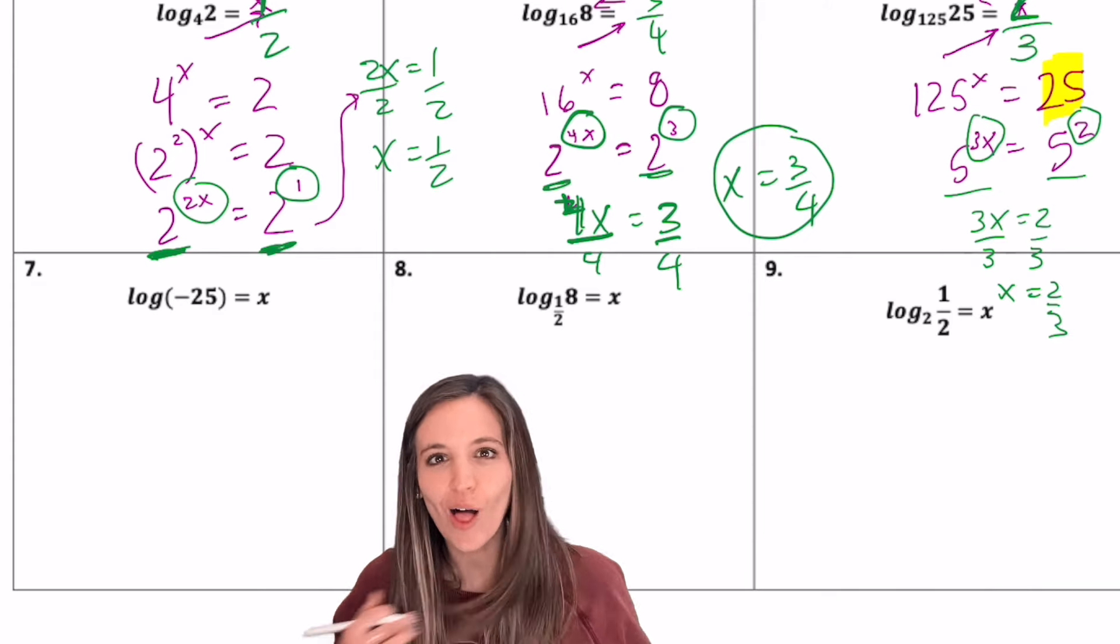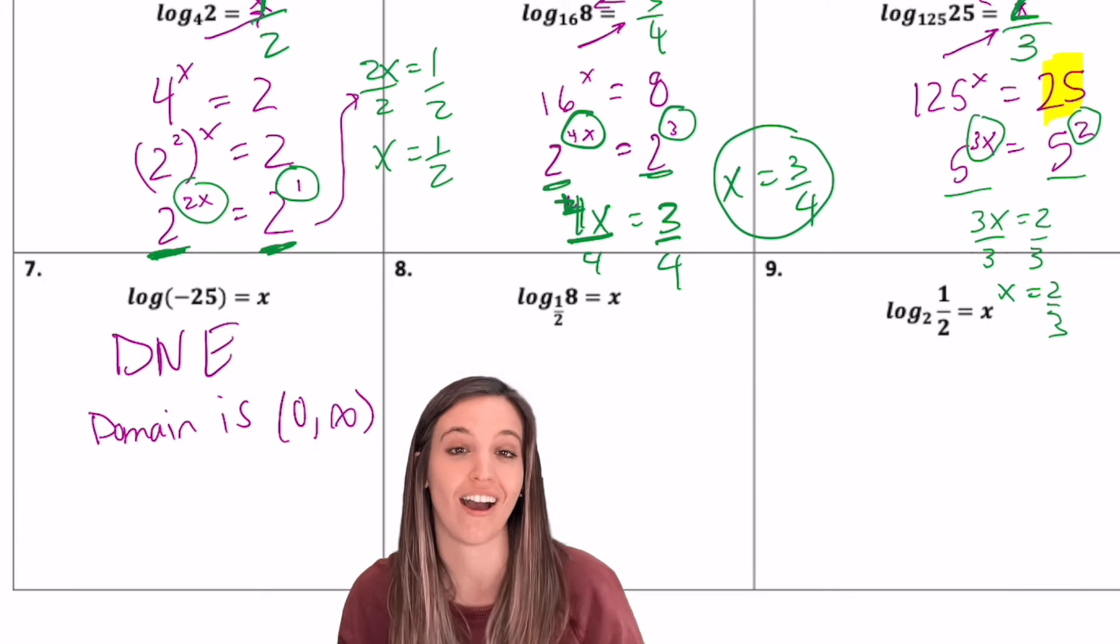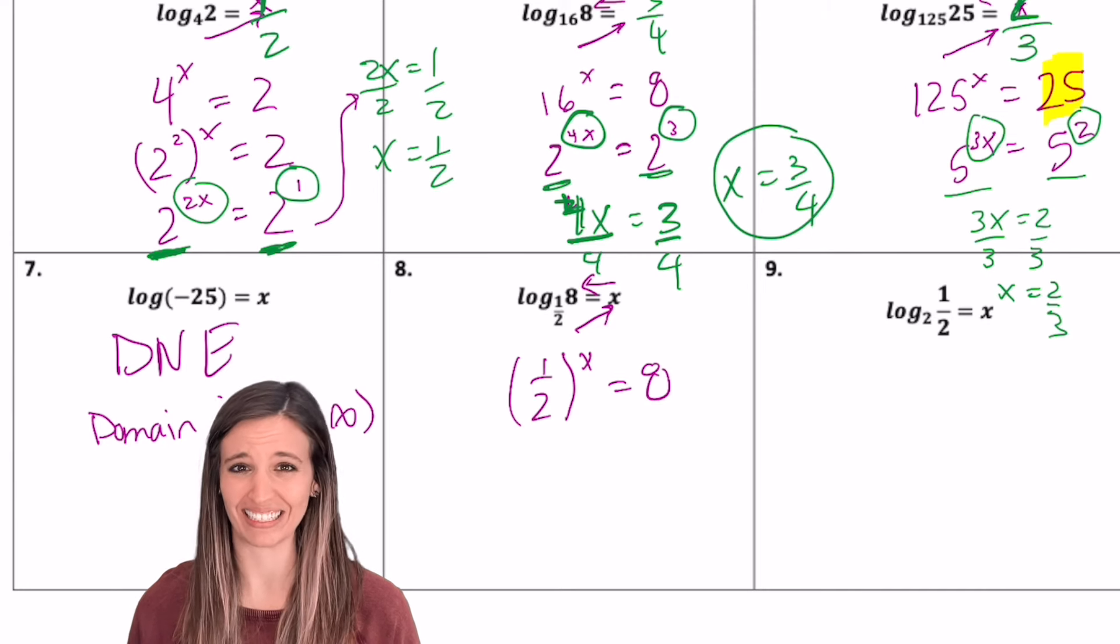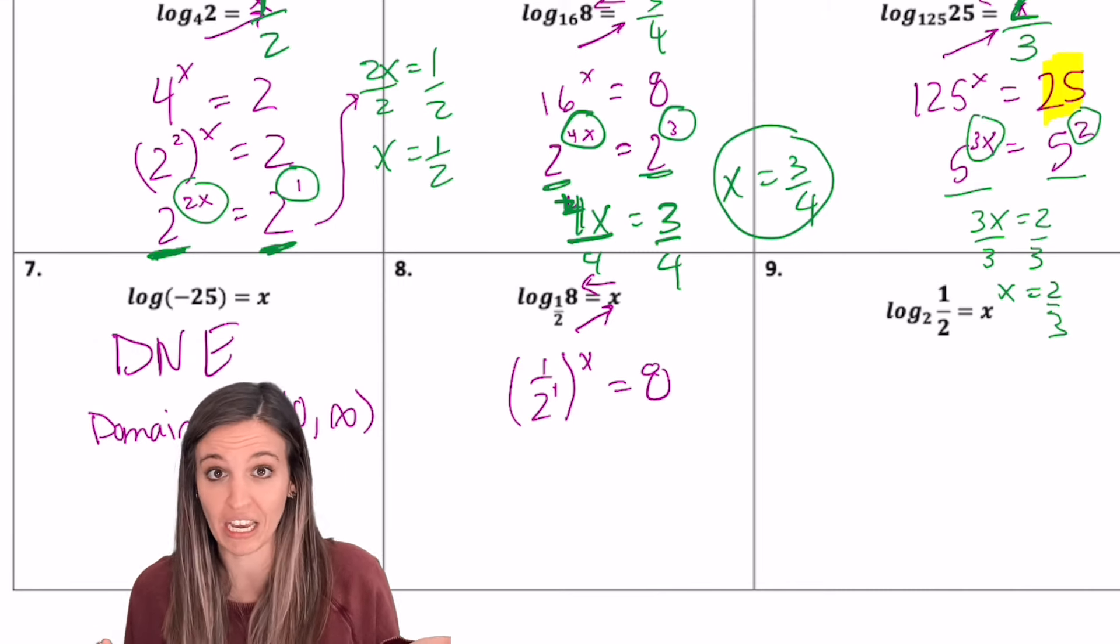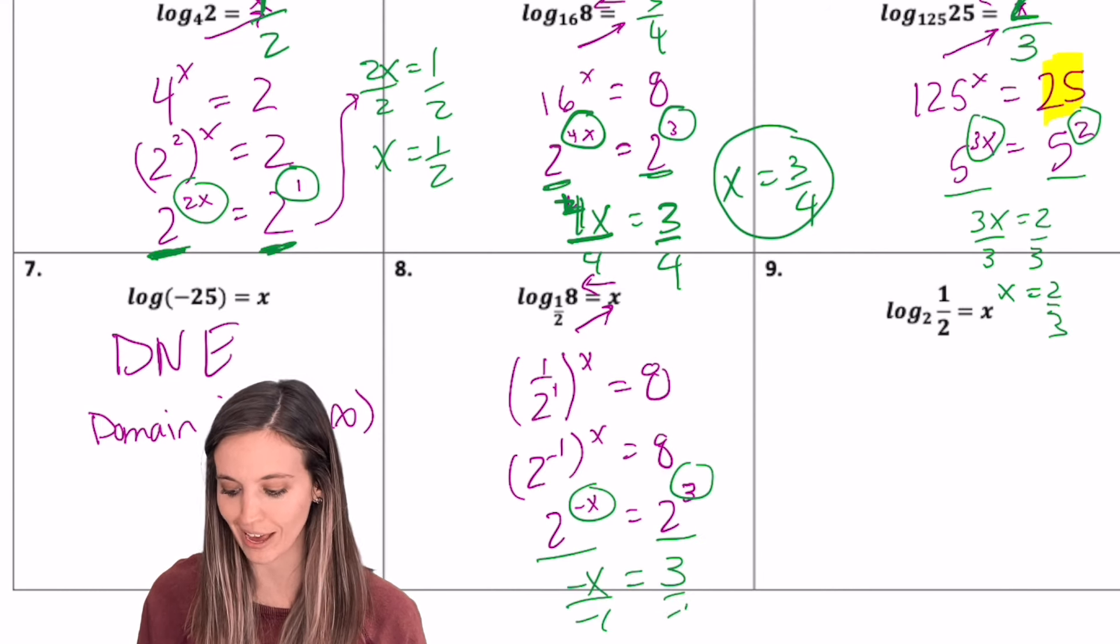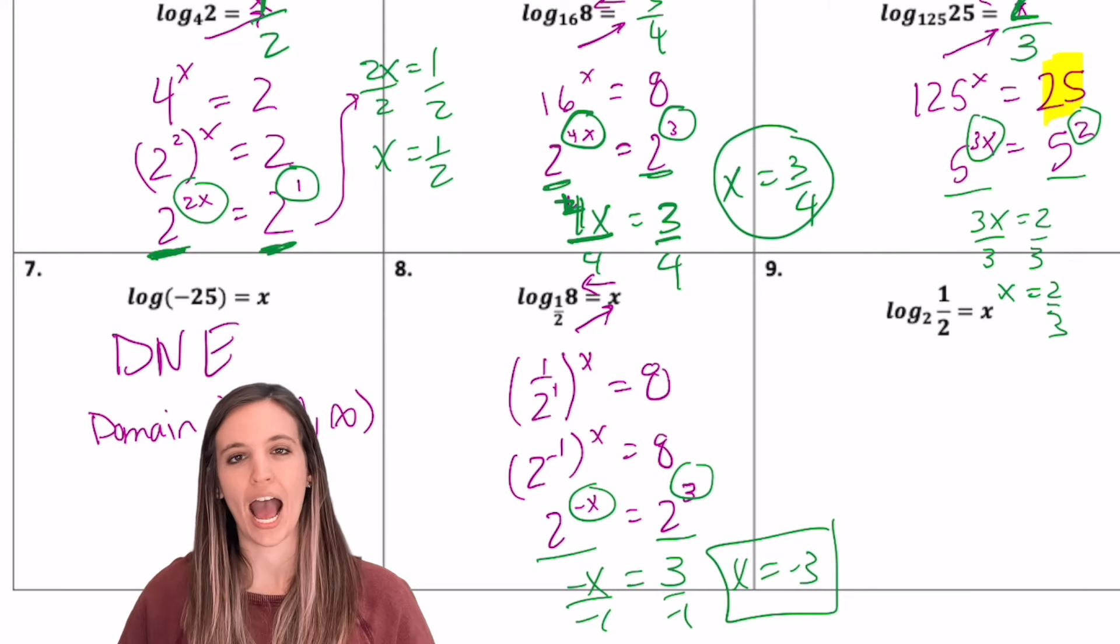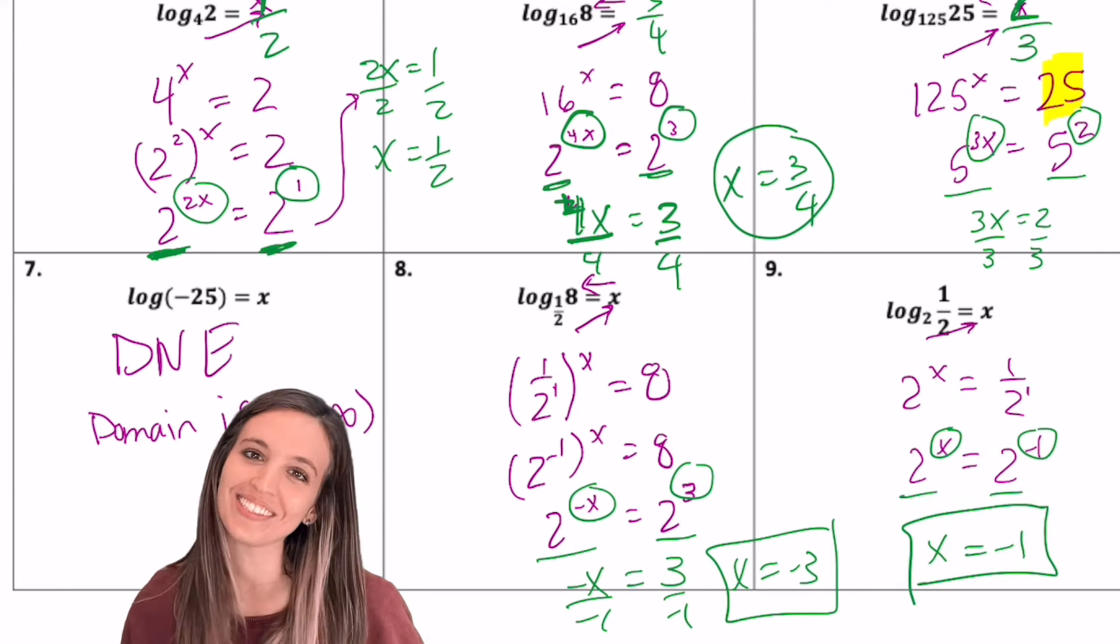Try number seven. Ha ha ha. Did I get you on that one? Log of a negative number. We can't do that. Does not exist. The domain of a log is zero to infinity, not inclusive. Looking at eight, I have a fraction as my base. Let's change it to exponential. Changing eight to base one half. Yuck. Let's change one half to base two. I know that this two in the denominator is just to the one power. So why don't I move that to the numerator, making it negative. So it looks like our common base is going to be two. So let's change eight to two to the third power. Now we have those common bases, setting those exponents equal to each other. It's looking like X is going to be negative three. Interesting. So when we had the base as a fraction, we ended up getting a negative answer. How about you try this last one? Test that knowledge. We get X equals negative one.